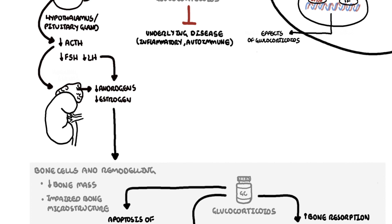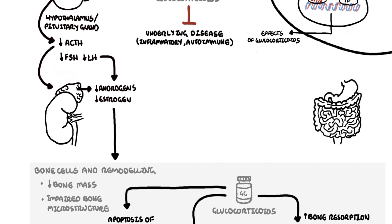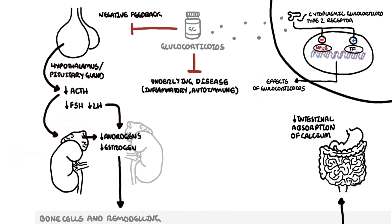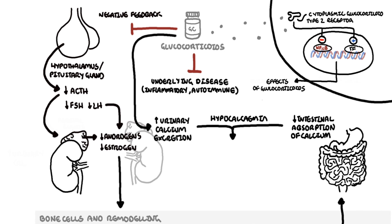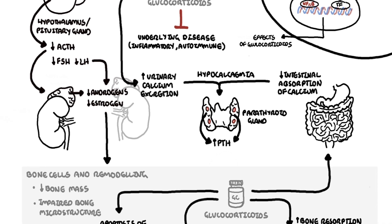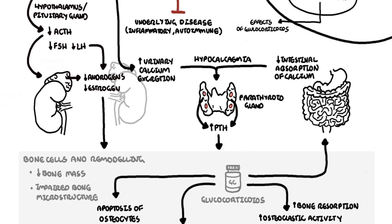When serum calcium is high, the body responds by reducing intestinal absorption of calcium from the gut and increasing urinary calcium excretion, which will cause hypocalcemia. Hypocalcemia will stimulate the parathyroid gland to release parathyroid hormone. Parathyroid hormone works by binding onto parathyroid hormone receptors on osteoblasts, which will stimulate expression of RANK-ligand, further promoting osteoclastogenesis and increasing bone resorption.